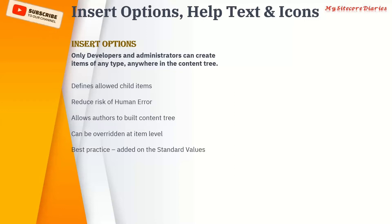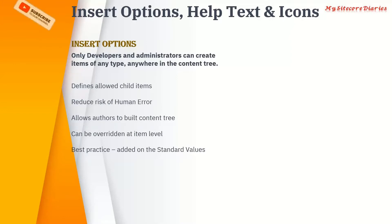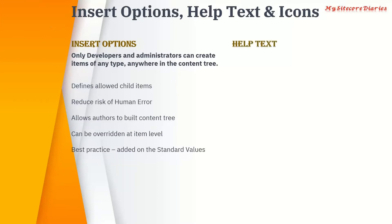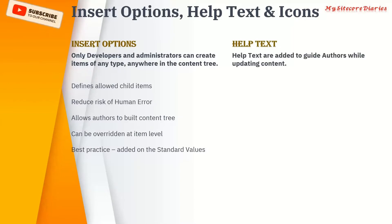To avoid confusion and access issues, we use insert options. Insert options allow you to select which child items can be created — for example, inside an article list folder, you can restrict it so only article templates are available. When you right-click, it shows only those templates. This reduces human error, allows authors to build the content tree, and can be overridden at item level. Best practice is to add this at standard values.